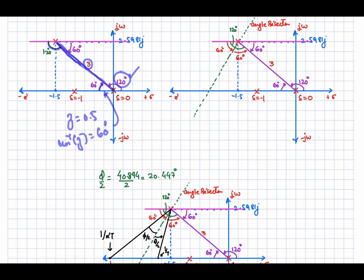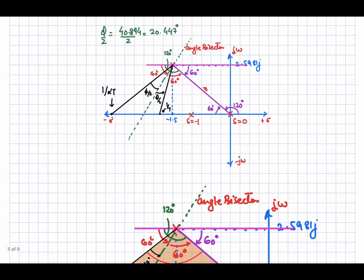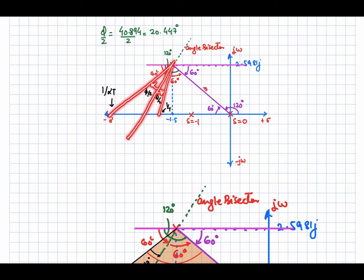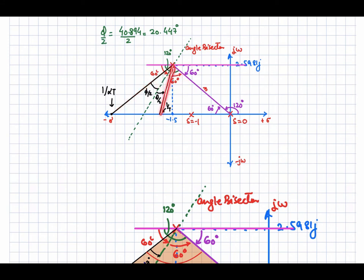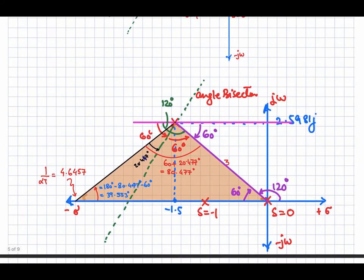Draw the bisector line, and from it draw two lines at φ/2 = 40.894°/2 = 20.447° on each side. The total angle for the upper line from the horizontal is 60° + 20.447° = 80.447°, and for the lower line it is 60° − 20.447° = 39.553°. These lines intersect the negative real axis at the compensator pole and zero positions.